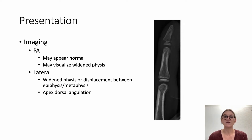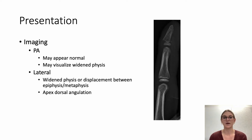In terms of imaging, on plain x-ray, on the PA view the finger may appear normal — you may be able to see a widened physis — but it's really on the lateral view that the injury can be appreciated. This is where you may see a widened physis or displacement between the epiphysis and the metaphysis, or apex dorsal angulation reflecting the flexed posturing of the finger.